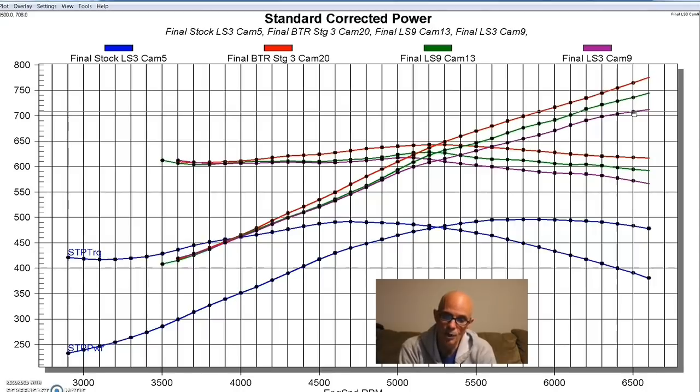These are our 700 horsepower combinations. And as it turned out, we were making way over 700 horsepower. We were making 765 or 770.